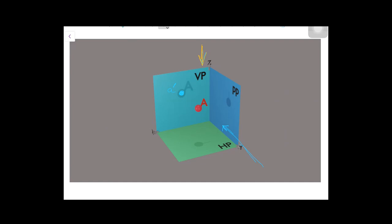When I watch this point from the top side, I get the top view of point A on the horizontal plane, represented as 'a'. Always remember that projections are represented by small alphabets. If the point name is B, its front view will be 'b dash' and its top view will be 'b'. When I watch the object from the left-hand side, its projection will be on the profile plane, represented as 'a double dash'.